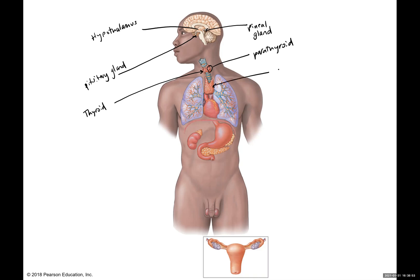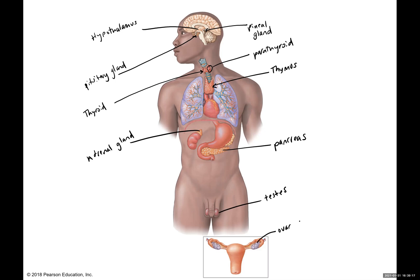Here we have the thymus, which we did not see on any of our models. We have on top of the kidney the adrenal gland. Remember, you have two of these, one on top of each kidney. We have the pancreas. And then remember, we have the gonads — the testes, which is the plural form, and ovaries, which is also the plural form.